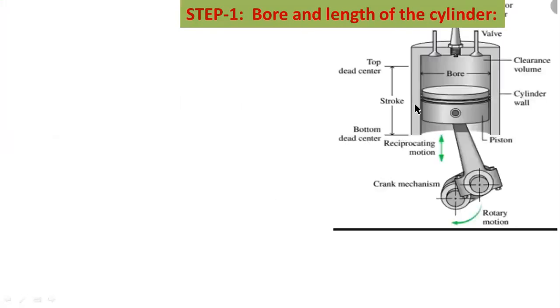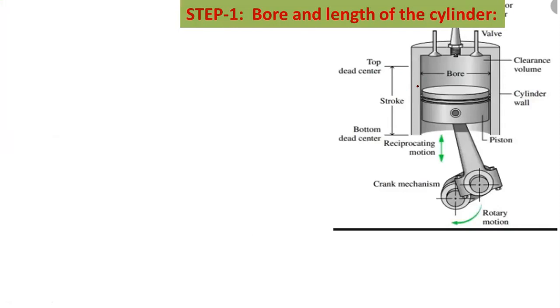The first step is to find out the bore diameter and length of the cylinder. Here is the diagram for a cylinder with the piston. This is the wall thickness, T is the thickness of the wall. It looks like a hollow cylinder. The inside diameter is called bore, that is capital D — the diameter of the bore or diameter of the piston. The diameter of the piston equals the diameter of the bore, capital D.